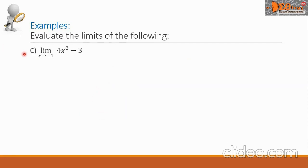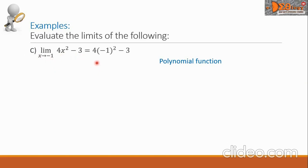Example C: the limit of 4x squared minus 3 as x approaches negative one. This is an example of a polynomial function. Substituting negative one: 4 times negative one squared minus 3. The square of negative one is positive one, so one times 4 minus 3 equals 4 minus 3, and the final answer is 1.